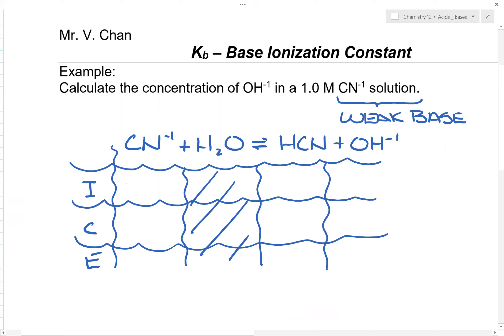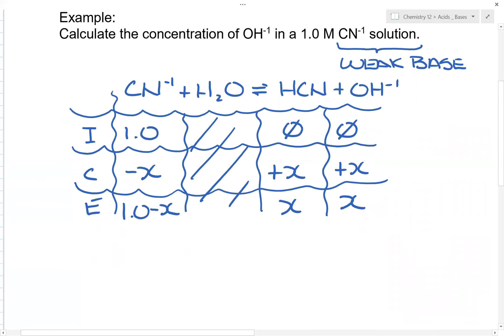So you have 1.000, this is minus x, this is plus x, plus x, you have 1.0 minus x, x, x.